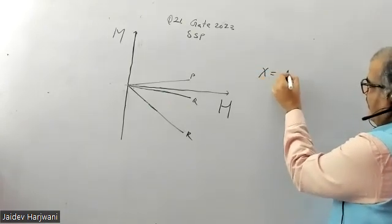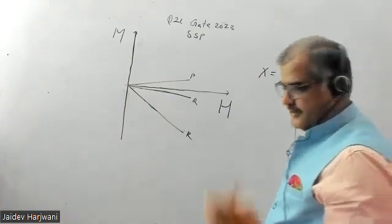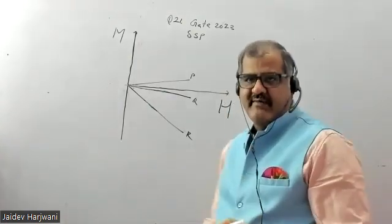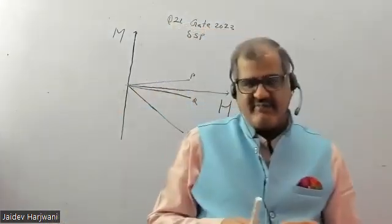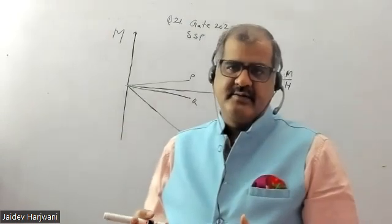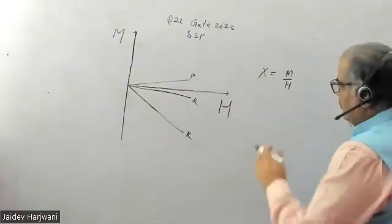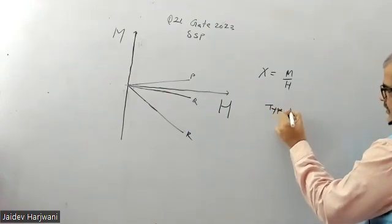You know the susceptibility is defined as M versus H. We know that diamagnetic materials have a negative susceptibility. If you take type 1 superconductor, type 1 superconductors are perfect diamagnetic.